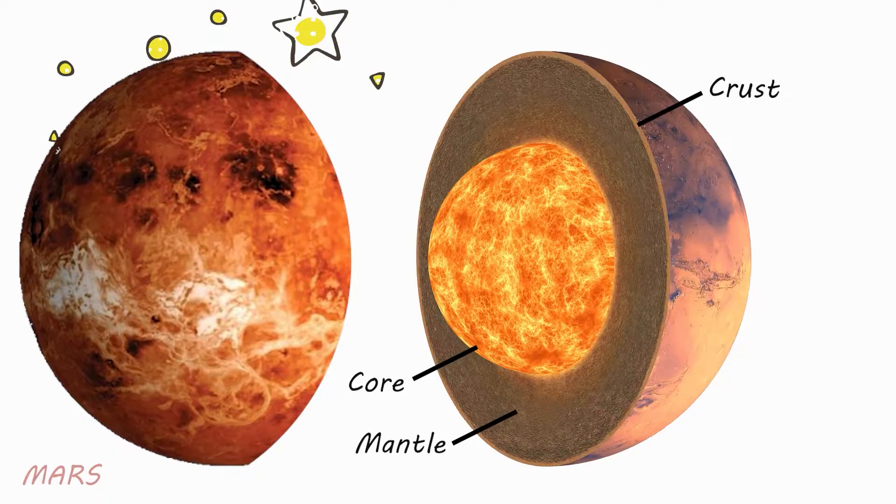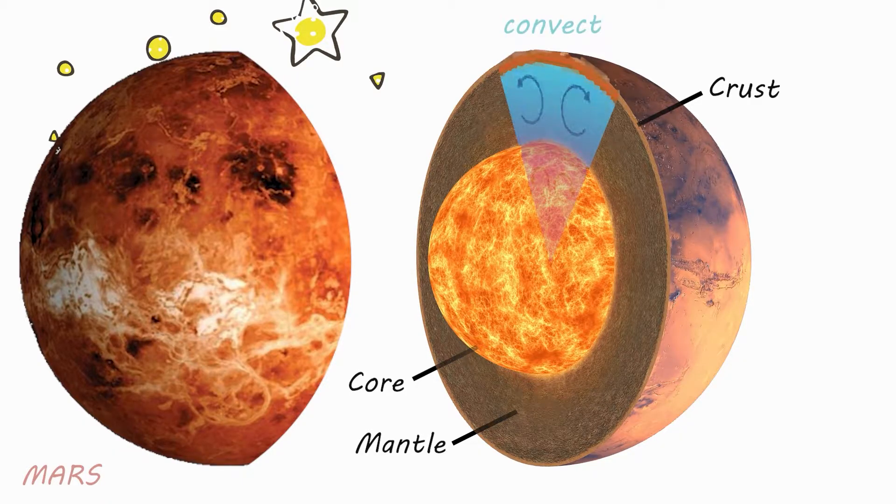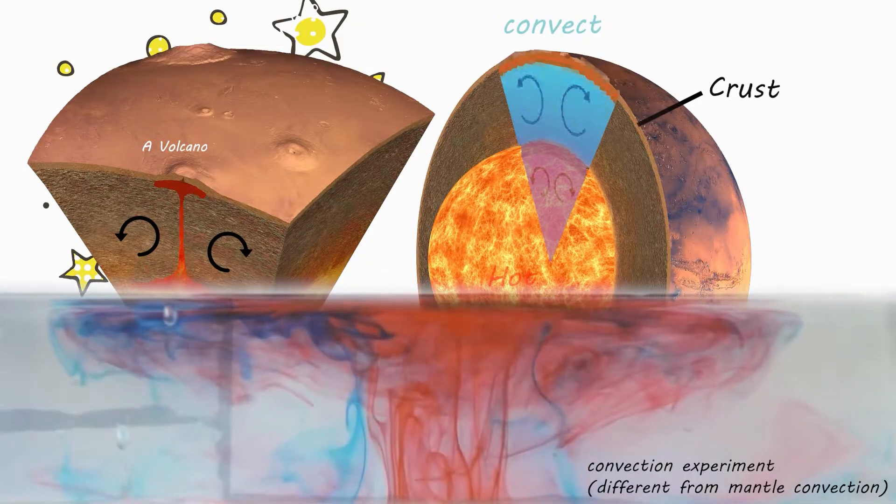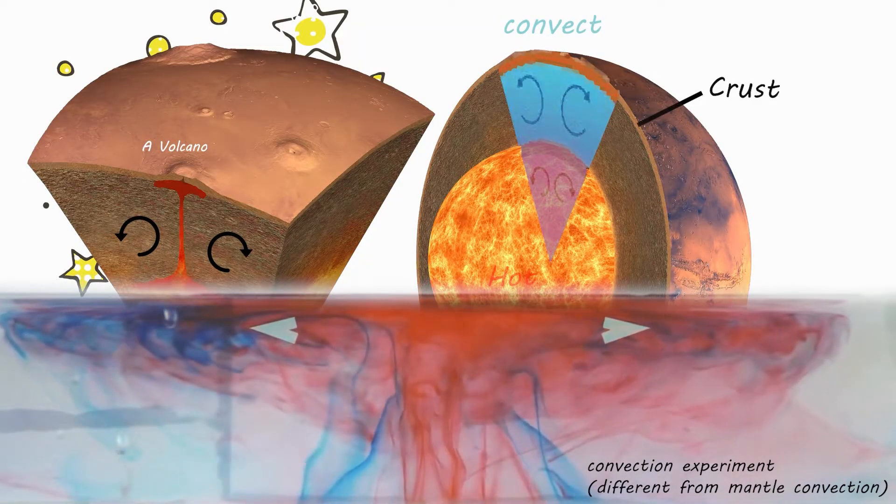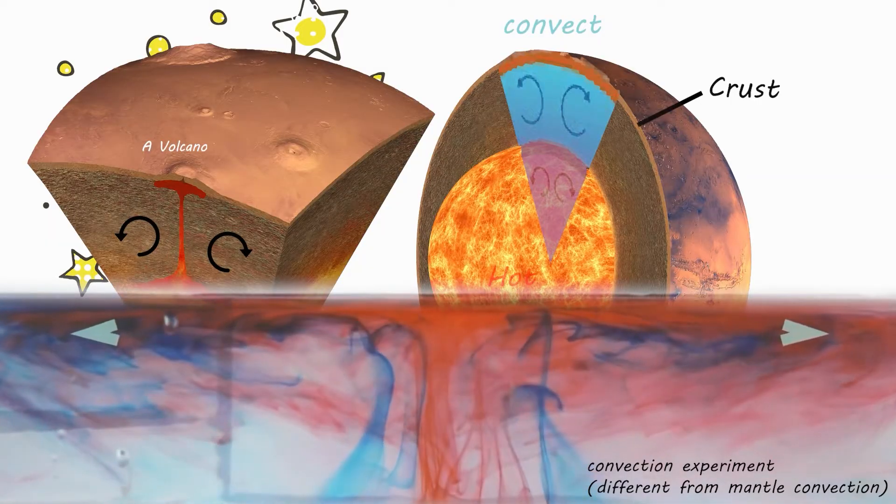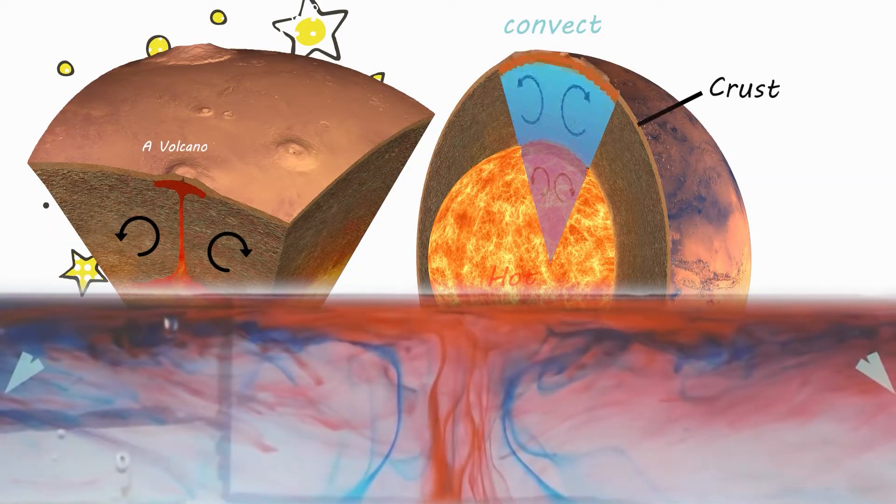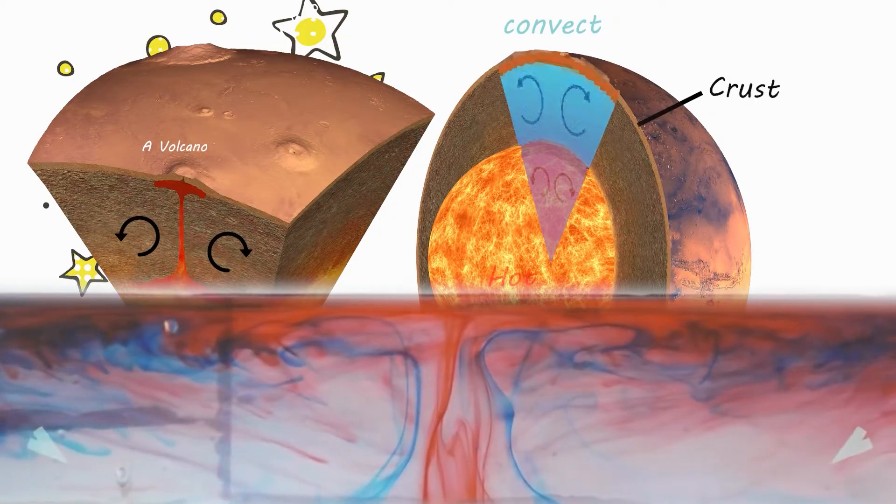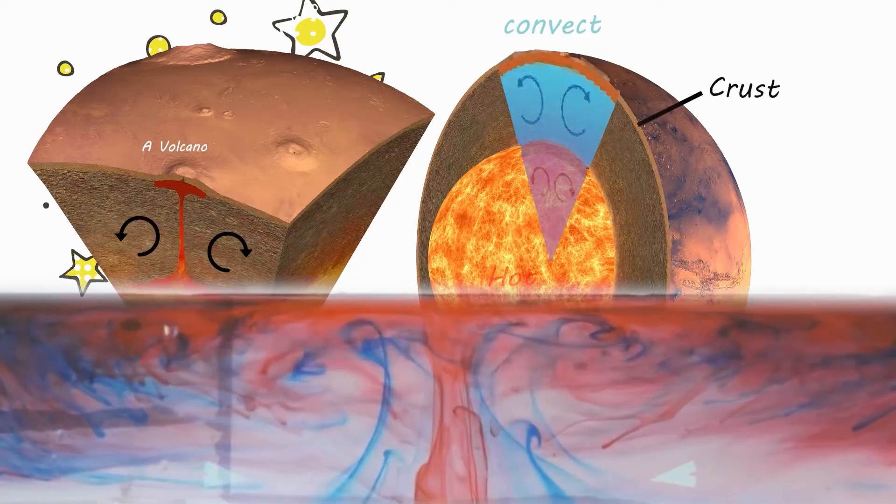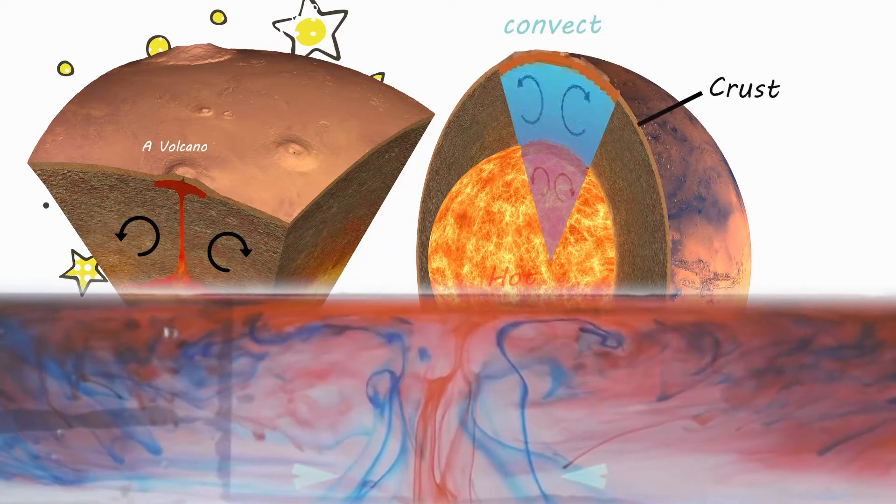Their mantles are hot enough to allow the mantle to convect. We know that mantle convection exists in some other planets, like Venus and Mars, because we can see their surfaces are deformed and have volcanoes. Therefore, scientists say these are actively convecting bodies with tectonic activity, just like Earth.